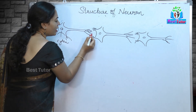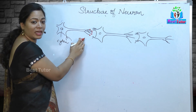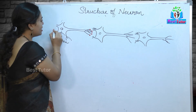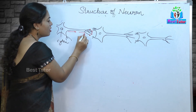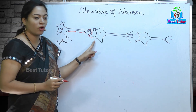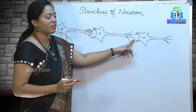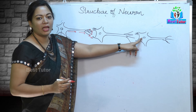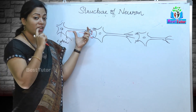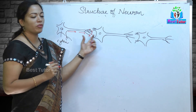The axon endings have neurotransmitters which produce chemical substances like acetylcholine. These neurotransmitters help in the transmission of the nerve impulse from one neuron to another. The dendrites of the next neuron receive the impulse and carry it through the cell body and the axon, until it reaches the axon endings, where it is again transmitted through neurotransmitters to another neuron. This is how nerve impulse is carried through neurons in a chain-like motion.